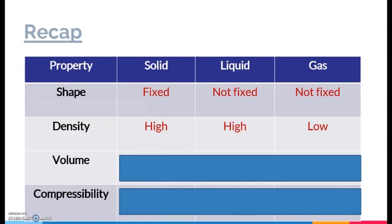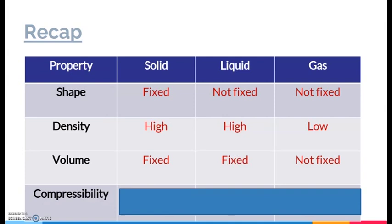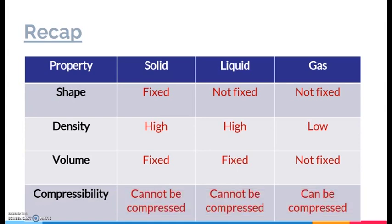In terms of density, the density for solid is high, likewise for liquid, and for gas it's actually very low density. As for volume, solid and liquid both have a fixed volume, whereas gas doesn't have a fixed volume. And last but not least, in terms of compressibility — which is the ability to compress the substance — solid and liquid substances cannot be compressed, whereas gaseous substances can be compressed.